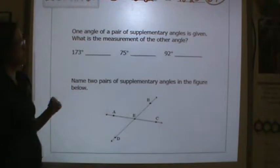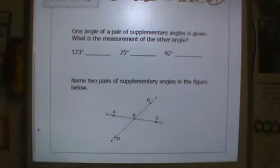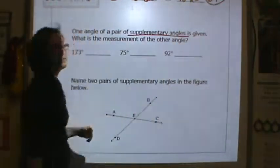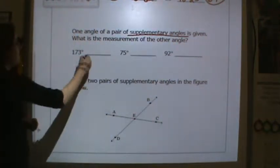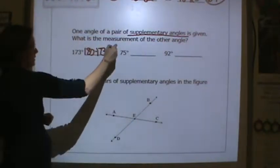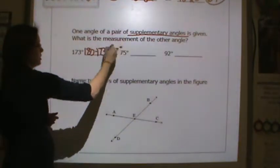Now one angle in a pair of supplementary angles is given. What is the measurement of the other angle? Now remember supplementary adds up to 180. So if I have 180 and I take away 173 I will have how many degrees? Seven degrees.